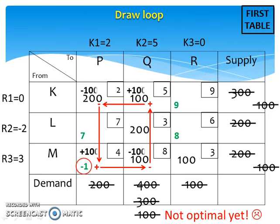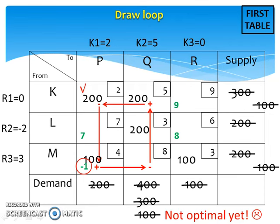There is no assigned value at this square with a plus sign, so we simply put 100 here. Here, the assigned value is 100 and it's a square with a minus sign, so we have 100 minus 100, thus the assigned value vanishes from this square. At this square with a plus sign, add 100 to the assigned value of 100, so it becomes 200. Finally, at this square with a minus sign, we have 200 minus 100, so the assigned value becomes 100. The rest of the assigned values outside the loop maintain their positions.